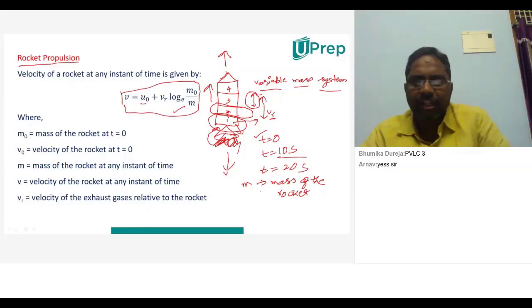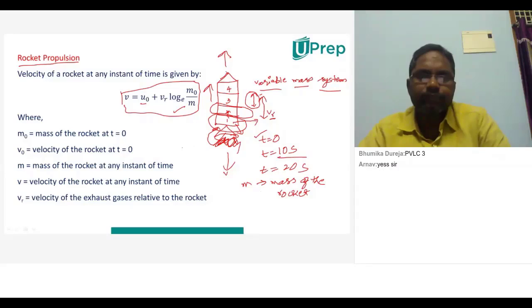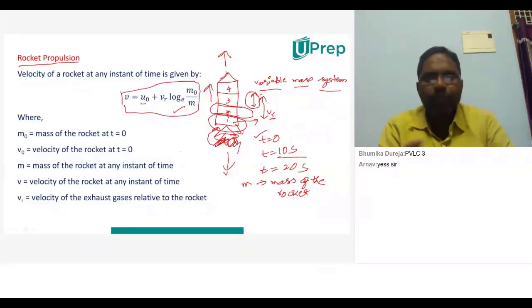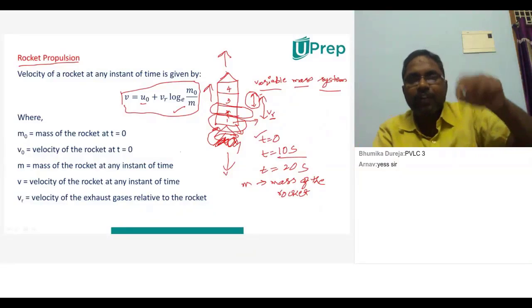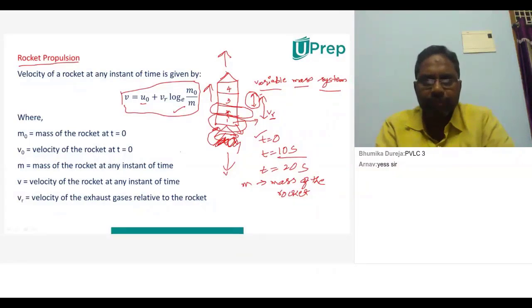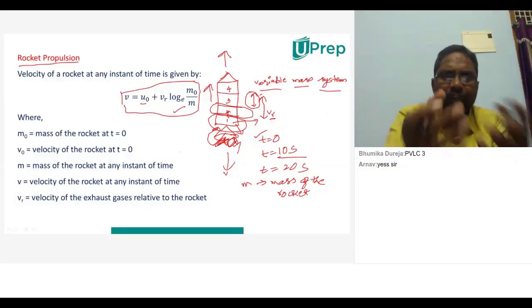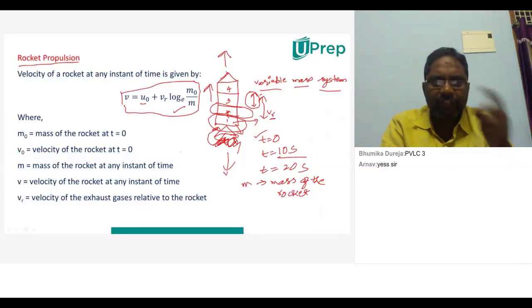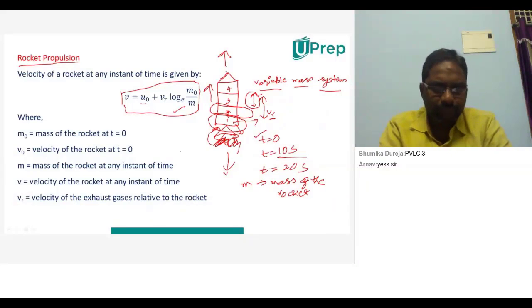By considering the rocket as a variable mass system we can derive this relation. This is an application of Newton's third law of motion, which is why we are learning about this equation. When you study variable mass systems completely you can understand how to derive it, but in basic terms: v is velocity at any time, u₀ is initial velocity, vᵣ is velocity of exhaust gases relative to the rocket, m₀ is initial mass, and m is mass at time t.